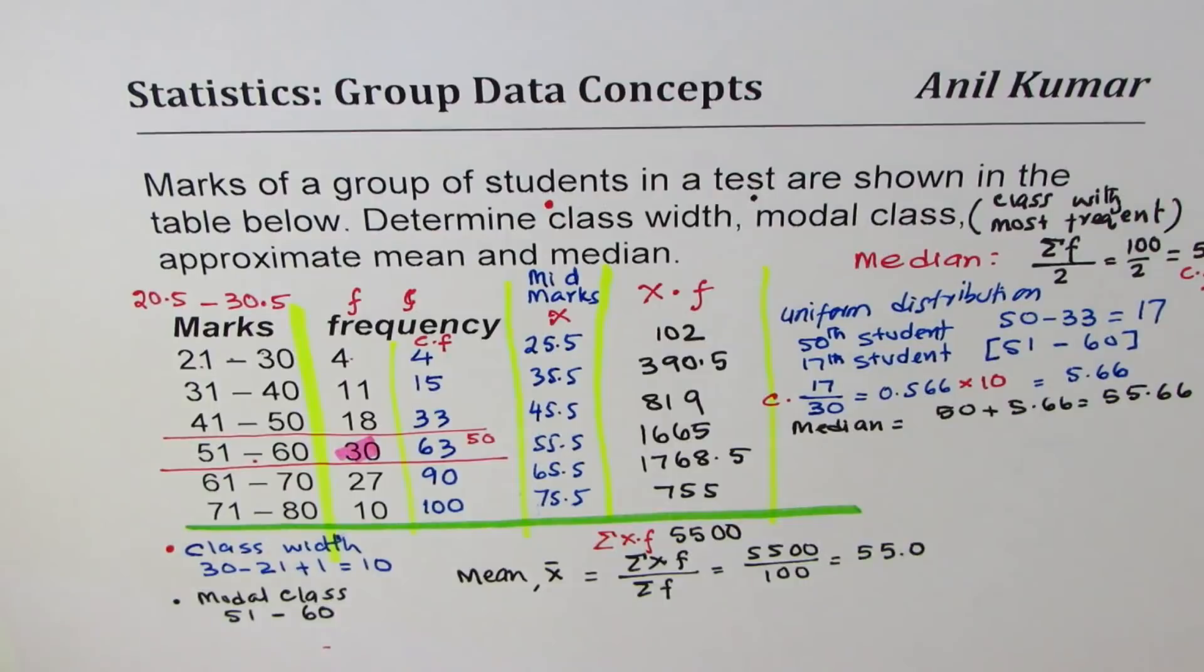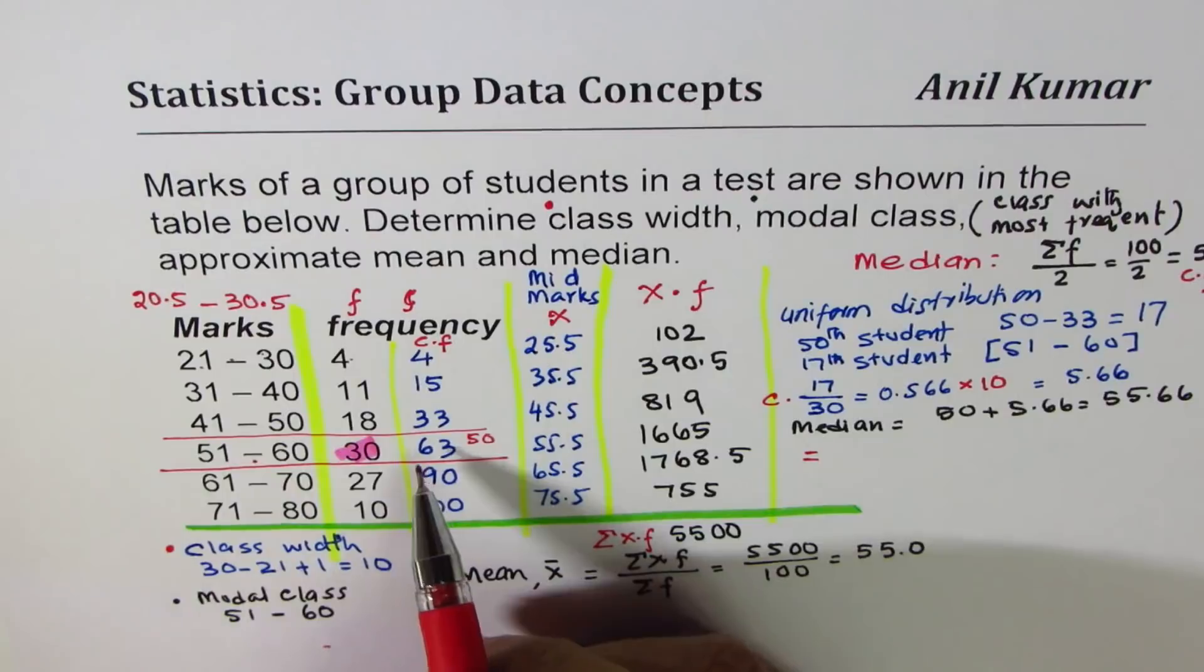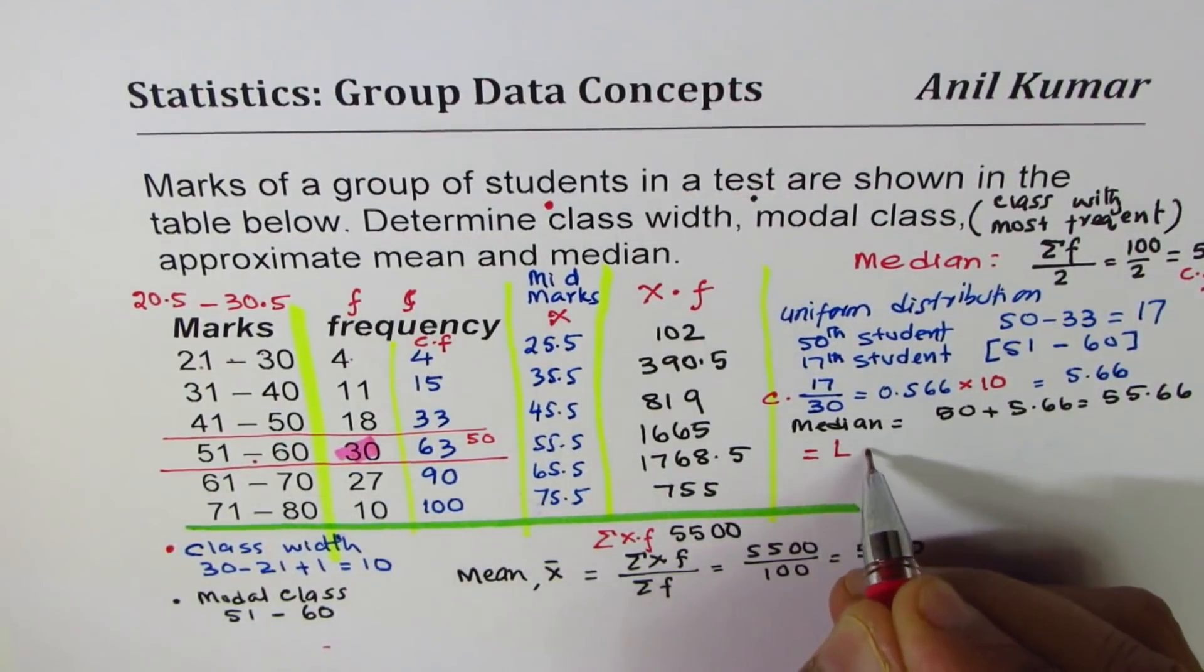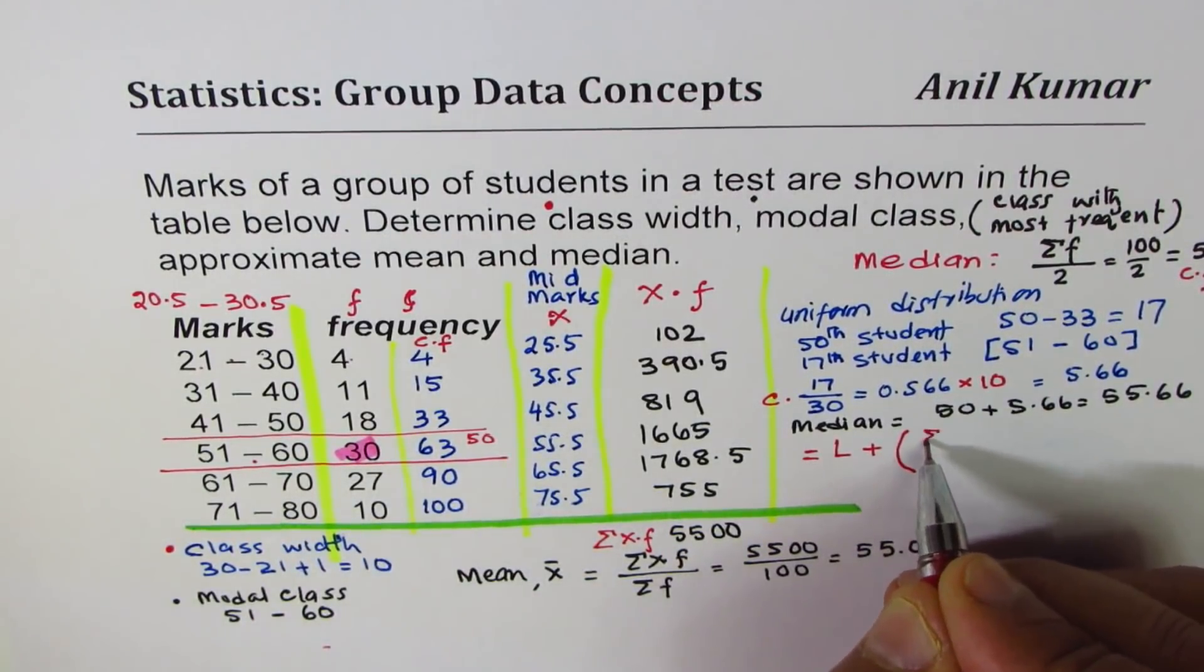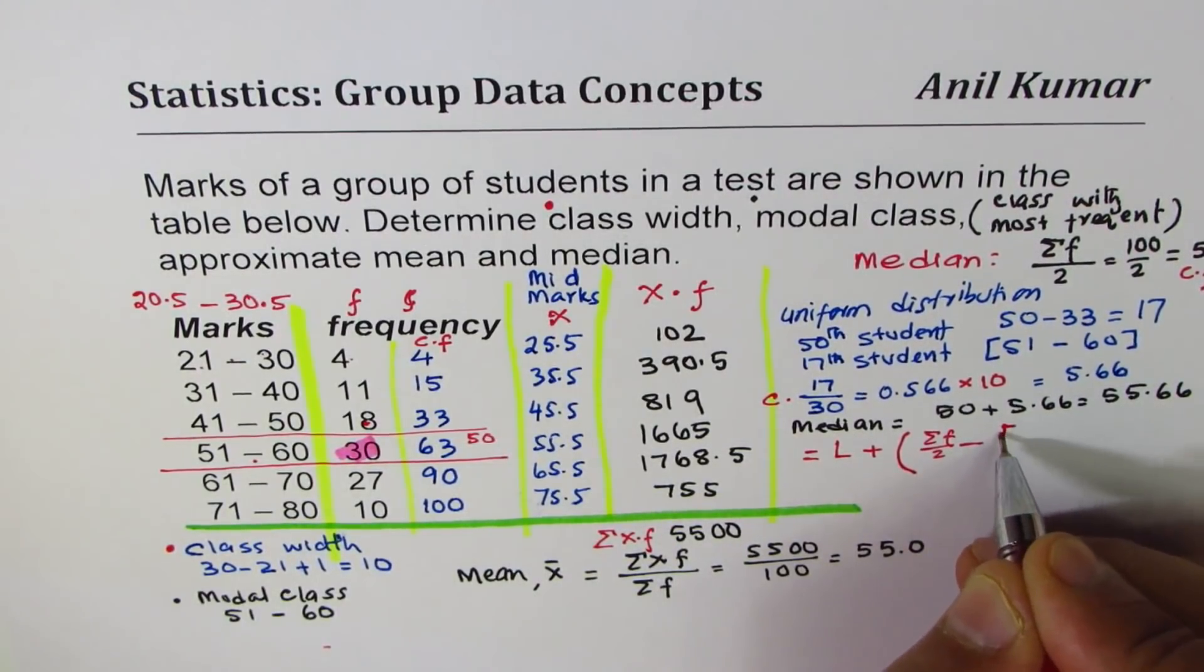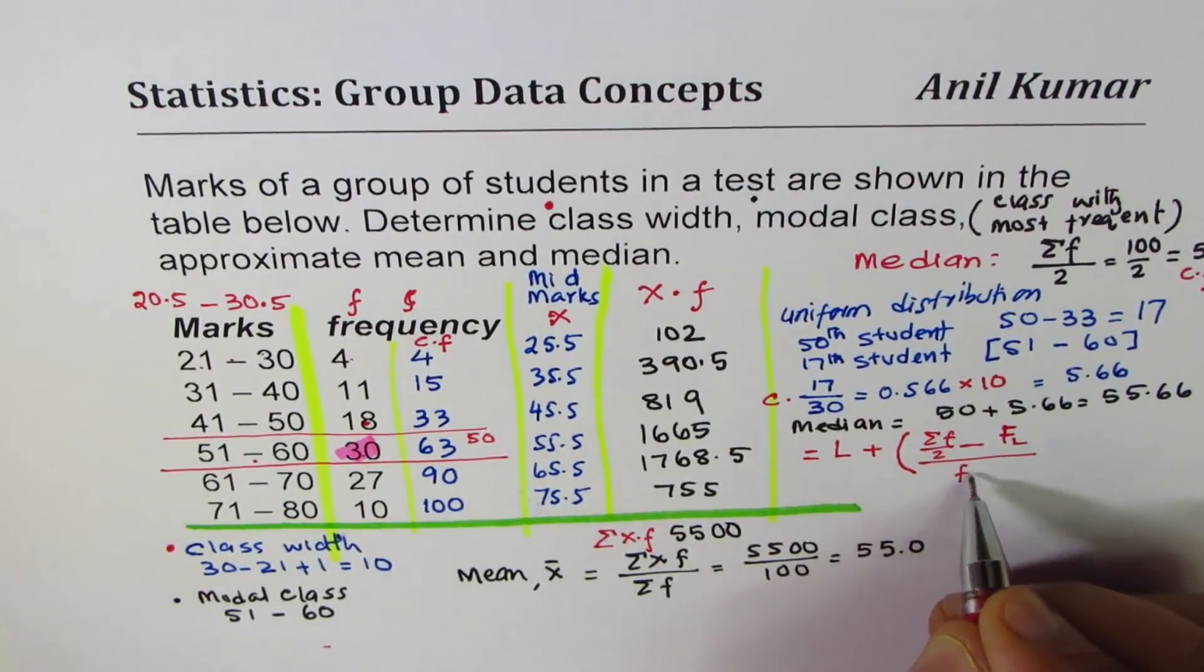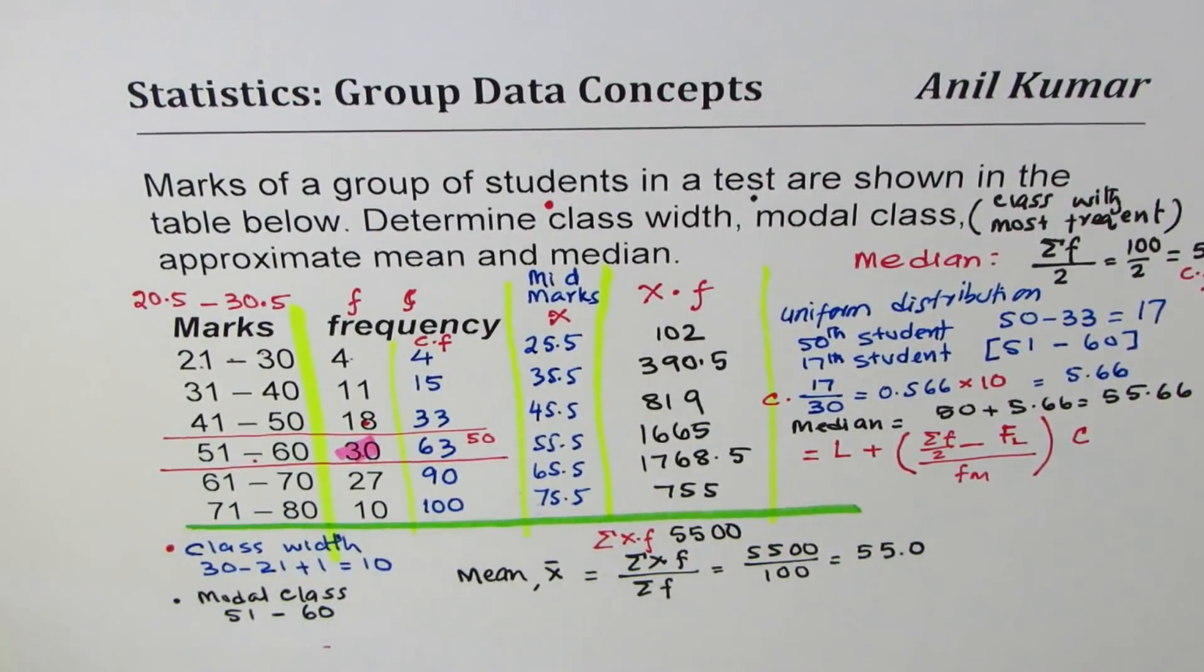Now here is the formula which you can use and calculate the answer. For median the formula is: whatever is the lower bound more than 50, we call this as the lower bound L plus sigma F over 2 take away that limit, which we say is cumulative frequency FL, divided by the frequency of the interval Fm times the class interval C. So that is the formula.